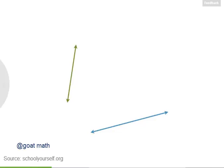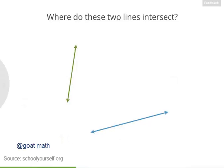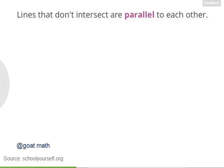Next, take a look at these two lines. At which point do they intersect? Remember, lines go on forever in both directions. Right, even though these lines don't appear to be touching each other as we've drawn them, lines actually go on forever in both directions, as indicated by these arrowheads. And you can see where these lines intersect by extending them. Sure enough, they intersect right where you said.